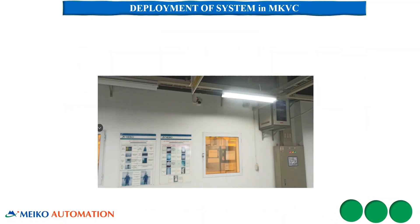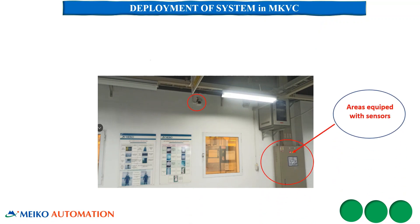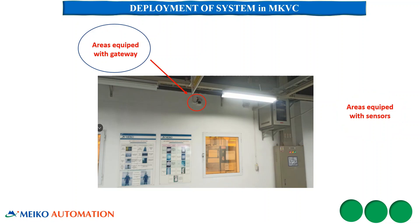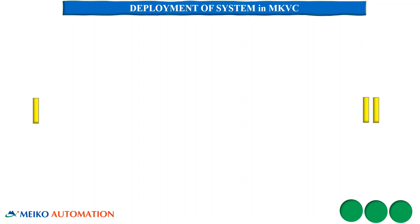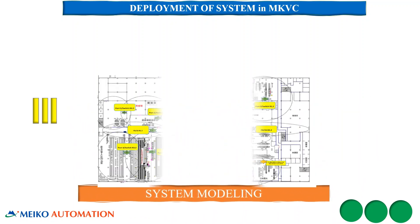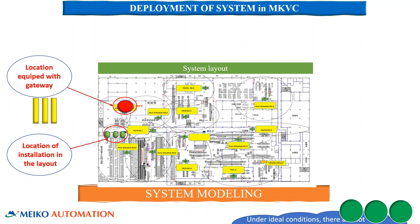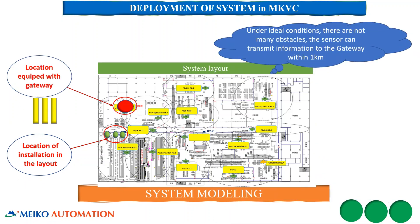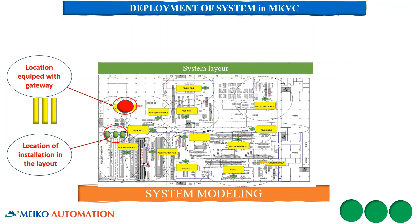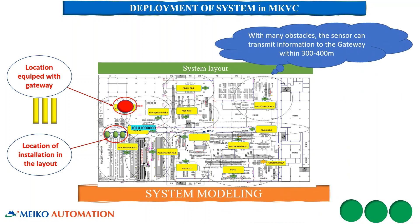To install the gateway, we choose to install it in the area where the sensors are installed. For further details, please see the system modeling in the installation layout. The layout shows locations equipped with sensors and locations equipped with gateways. Under ideal conditions with not many obstacles, the sensor can transmit information to the gateway within 300 to 400 meters.